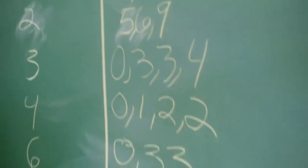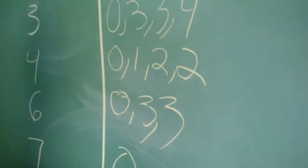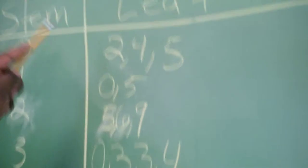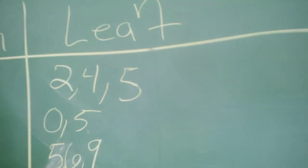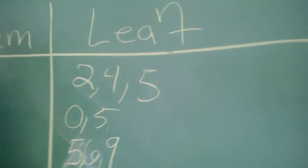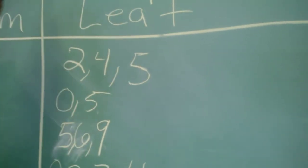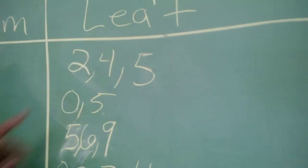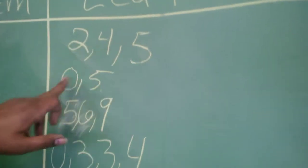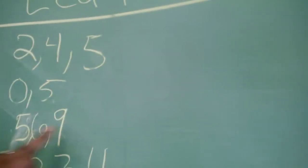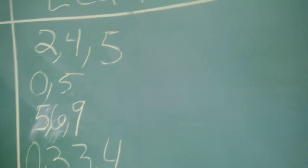How do you confirm from your stem-and-leaf plot that you have the original 20 you started with? Well, you start from zero and go by the second numbers. 1, 2, 3, 4, 5, 6, 7, 8, 9, 10, 11, 12, 13, 14, 15, 16, 17, 18, 19, 20. That's an A+. That's an A+. Thank you very much.